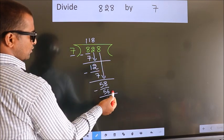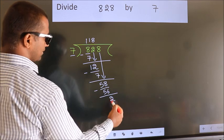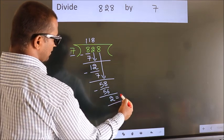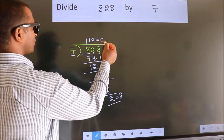No more numbers to bring down. So we stop here. This is our remainder. This is our quotient.